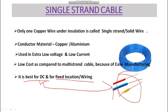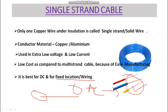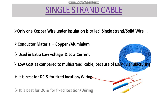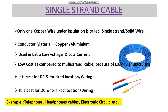Single-strand cable is best for DC supply and fixed locations. With DC current, the skin effect does not happen — skin effect only occurs with AC supply. Where we have fixed locations and won't frequently change the wire, we can use solid wire. Its applications include telephone wire, headphone cables, and electronic circuits like PCB boards.